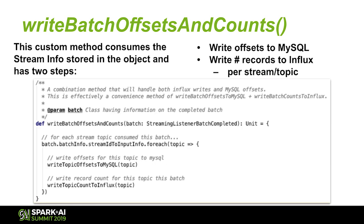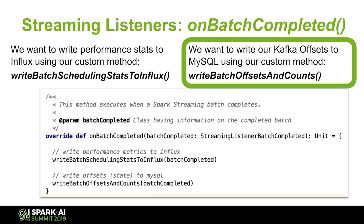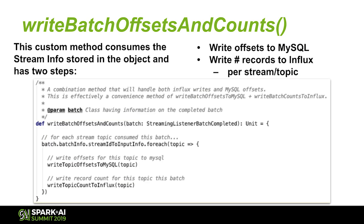On batch completed, we have two custom methods — we've covered the first one and we're digging into the second. We have two custom methods inside that operate on each topic we process. Because you don't always read one topic in every single batch — you might read two, three, or just one — that's what the for-each is for. We write the offsets for that topic to MySQL and then write the count for each topic to Influx. It's a neat little combination method.